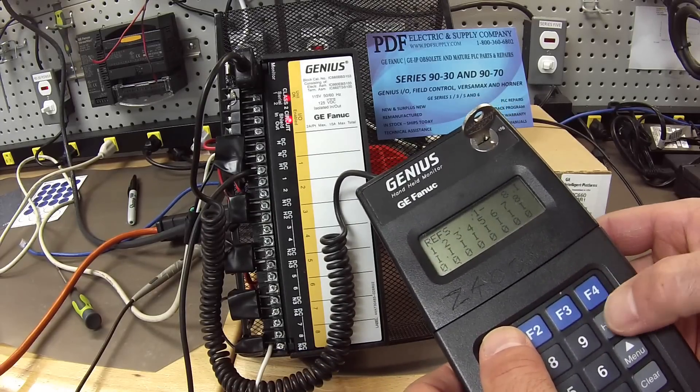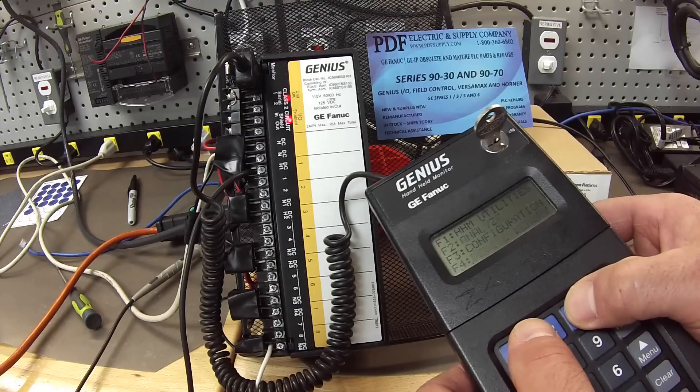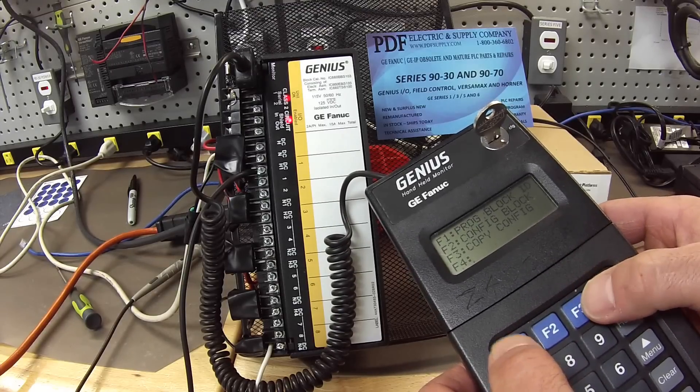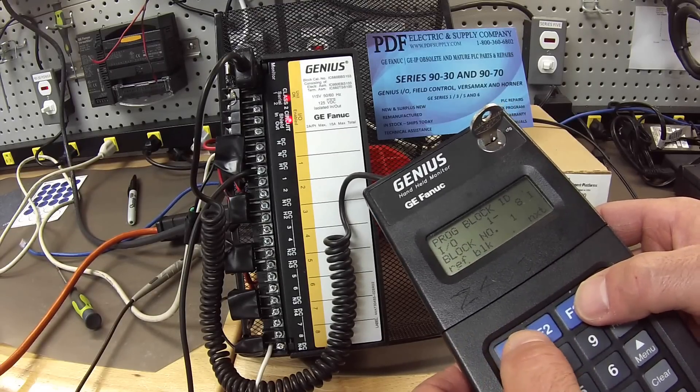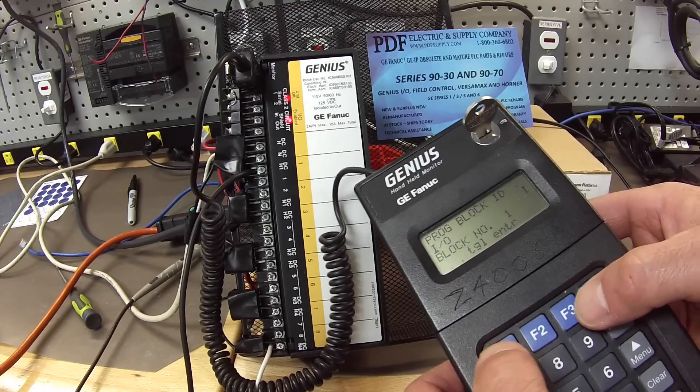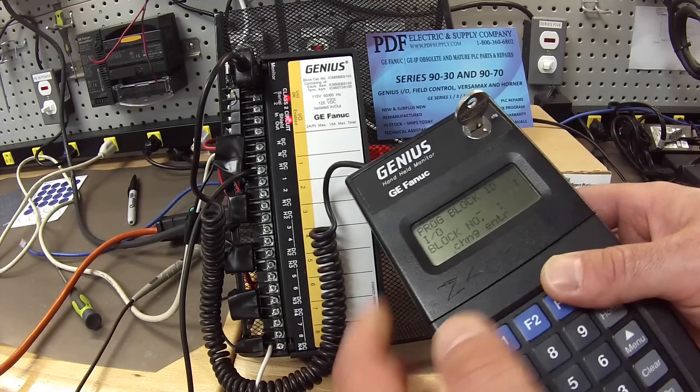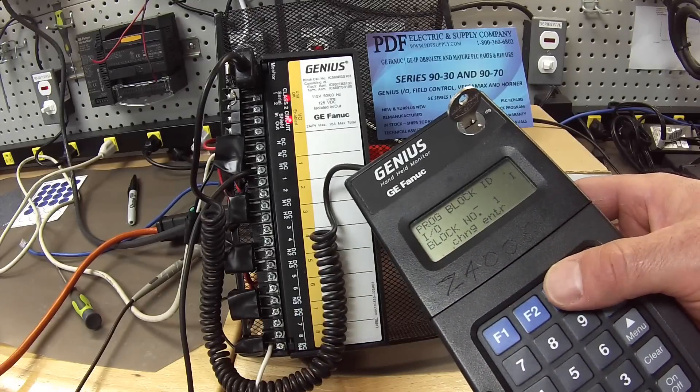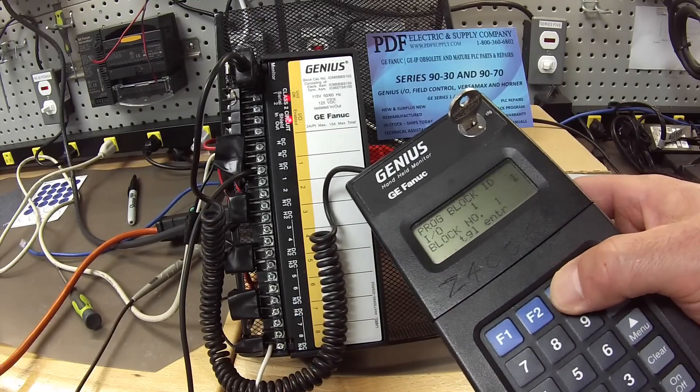We're going to go back home, configuration F3, F1 program block ID. I'm going to reset this as an output by hitting F1 for reference, enter. I'm going to put a one in and enter.